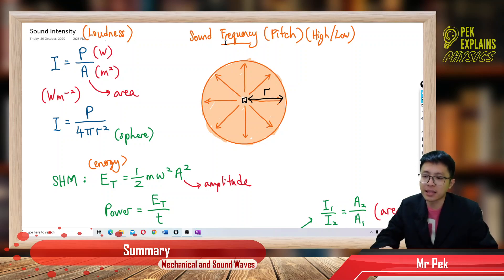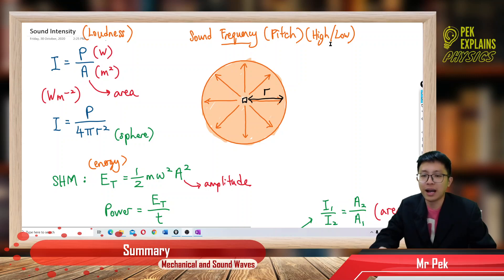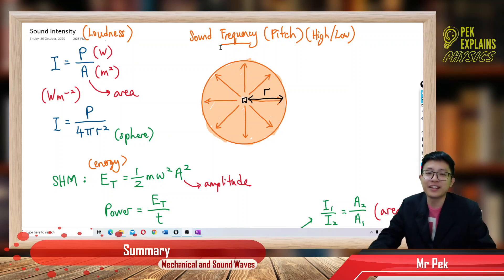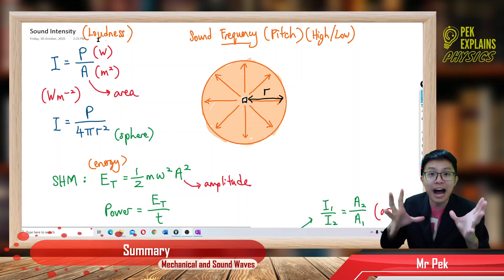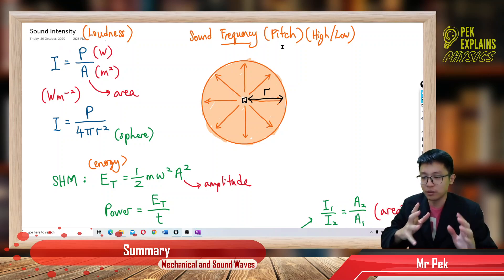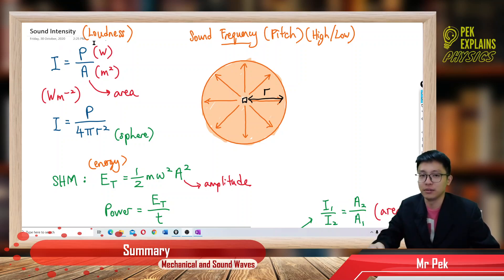Another term is sound frequency. Sound frequency is the pitch — the high or low of sound. What's the difference between high sound and loud sound? High sound means it's a very high-pitched sound, while loud sound means it's very loud. You must differentiate between high sound and loud sound.